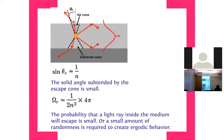Consider a point source emitting light inside a higher-index material. Rays incident at an angle larger than the critical angle are totally internally reflected and propagate like a waveguide. But a ray incident at an angle smaller than the critical angle escapes by refraction. The cone defined by these angles is called the escape cone or air cone — this is the cone of light that will escape out from inside the semiconductor.